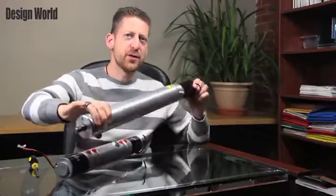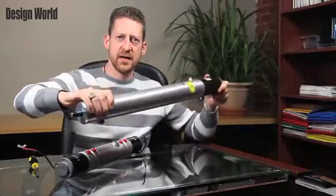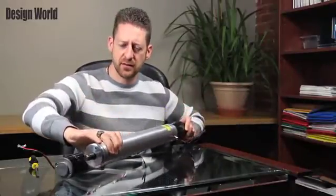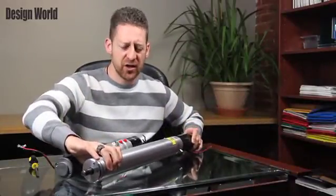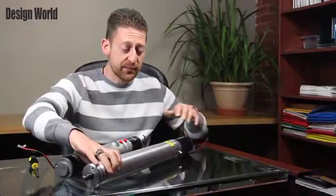So the first thing you might notice about this cylinder is that it has no ports. Nowhere to connect it to your hydraulic system. Well, that's because you don't. It's completely self-contained. This is truly leak-proof because it is a sealed hydraulic system. All you do is wire it into your electrical system and you're done.